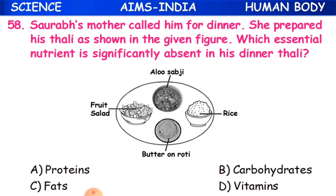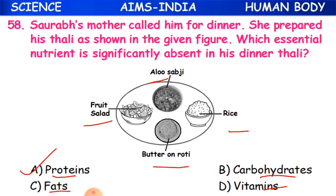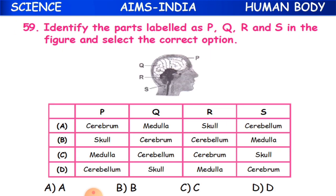Question 58: Saurab's mother prepared his dinner thali with aloo sabzi, fruit salad, butter, roti, and rice. Which essential nutrient is significantly absent? The missing nutrient is proteins - like milk, eggs, and meat - which are not present in this plate.